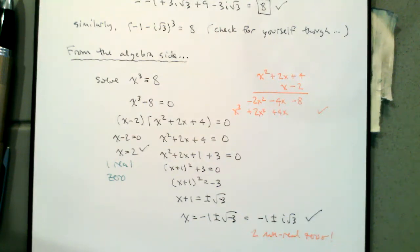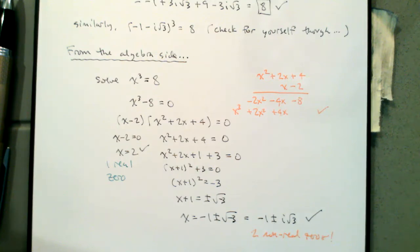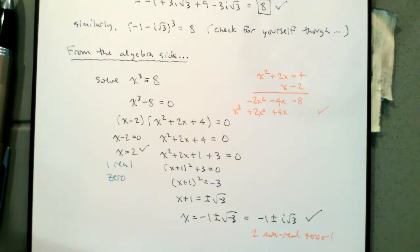The algebra and the trig fit together so well, along with all this polar coordinate work. We found the three complex cube roots of 8 from a polar coordinate standpoint using a conjecture about the nth roots of a complex number, and we also solved it from the algebra side — factoring, or using the fact that 2 is a zero of x cubed minus 8, so x minus 2 is a factor of that polynomial.